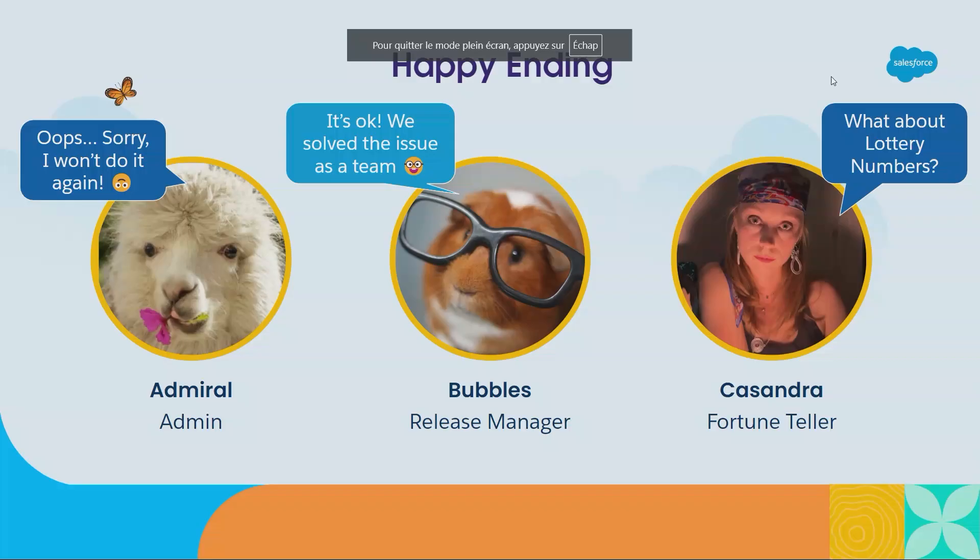Our story now has a happy ending. Our release manager is happy having open source tools that can help him monitor the org. I'm a fortune teller happy with a happy client — customer satisfaction is a priority for us. And we have admins who do not touch stuff in production anymore. Because once admins are seen doing something directly in production — when they know that the whole team will know — strangely, they stop breaking production.